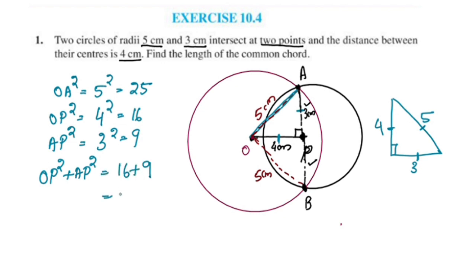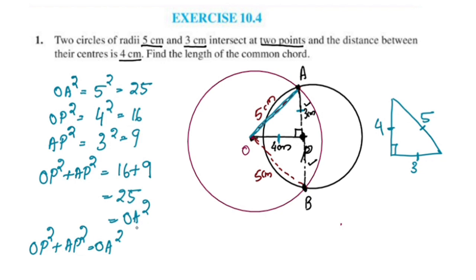16 plus 9 equals 25. OA squared equals 25. So OP squared plus AP squared equals OA squared. The sum of the two sides equals the square of the hypotenuse.